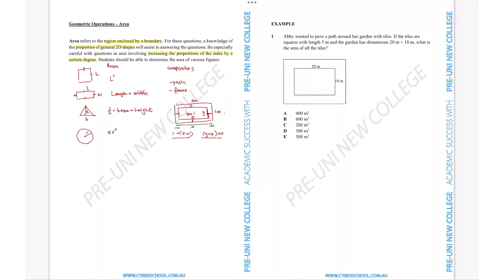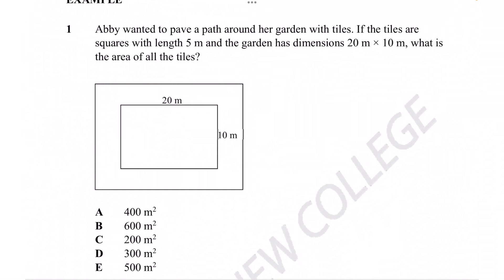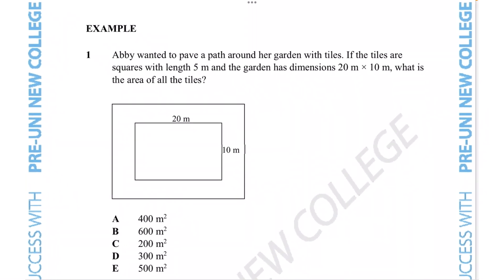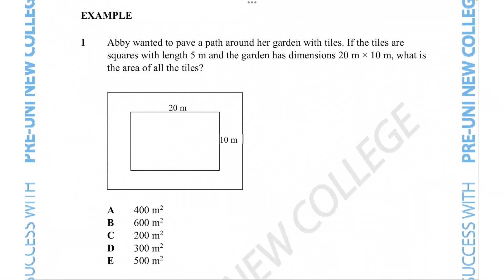Now that's enough of an introduction since these questions do tend to be fairly straightforward as long as you recognize which formula to use to figure out the area. Let's see if we can apply the knowledge by tackling this example question. Okay, so in this question it says, Abby wanted to pave a path around her garden with tiles. If the tiles are squares with length 5 meters and the garden has dimensions of 20 by 10 meters, what is the area of all the tiles?